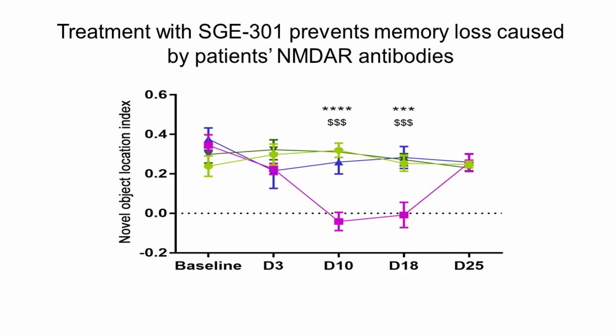When we examined the memory effects of the antibodies, we saw the expected decrease of memory, but animals that received the same patient CSF and were treated with the drug had no alteration of memory. These animals were similar to the control groups that received or did not receive the drug. In summary, we show that a positive allosteric modulator of the NMDAR receptor is able to antagonize all pathogenic effects of patients' antibodies in our model.